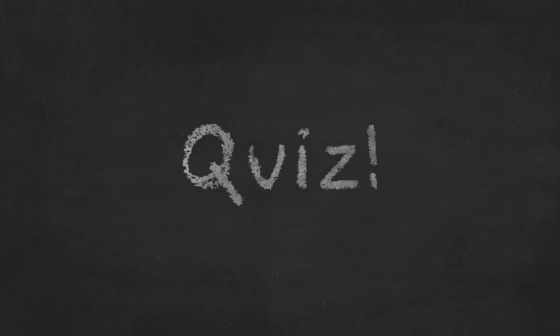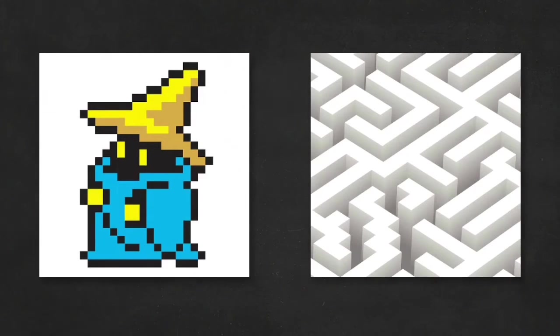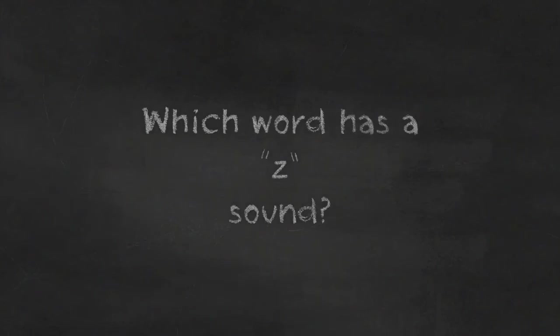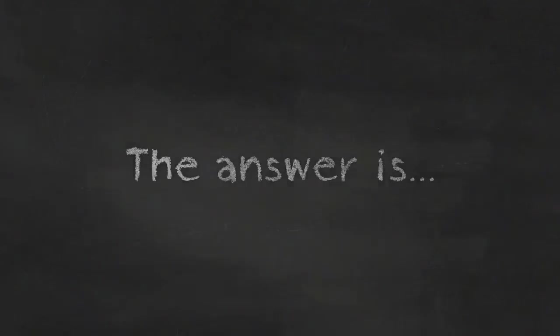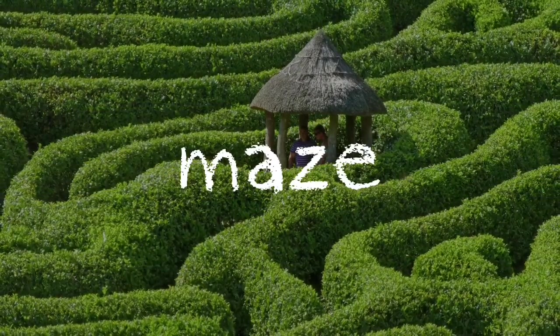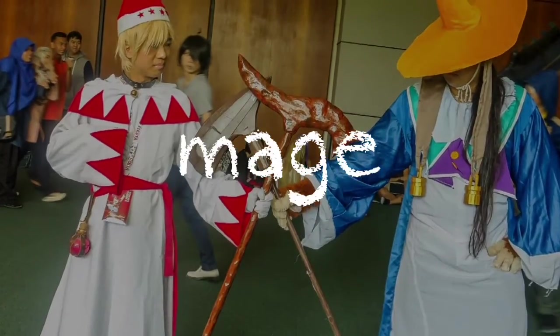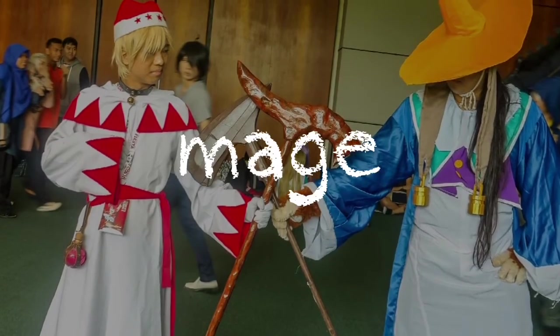Okay, time for a quiz. Here we have two pictures. On the left we have a mage — that's kind of a magician. And on the right we have a maize. Which word has a Z sound — mage or maize? The answer is maize. M-A-Z-E spells maize. By the way, mage is spelled M-A-G-E.